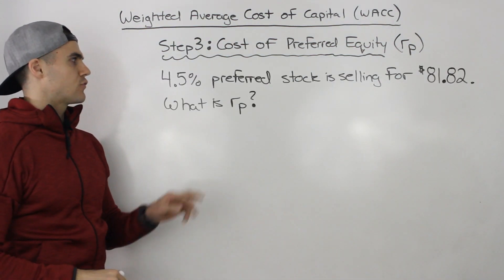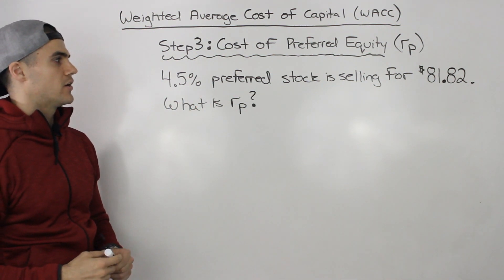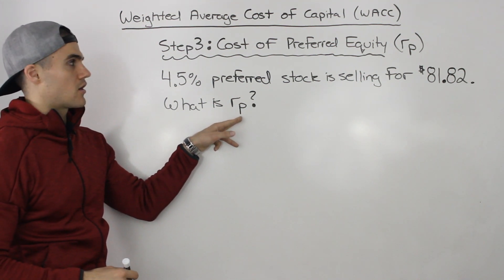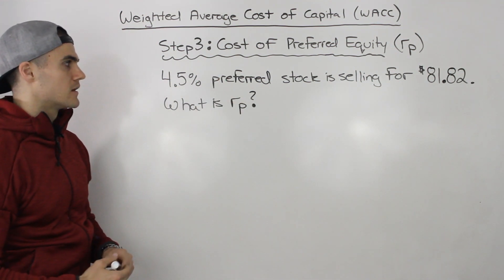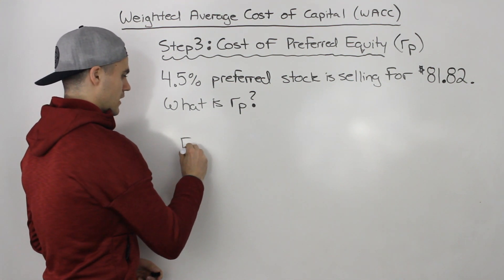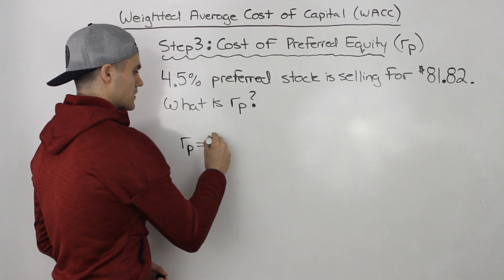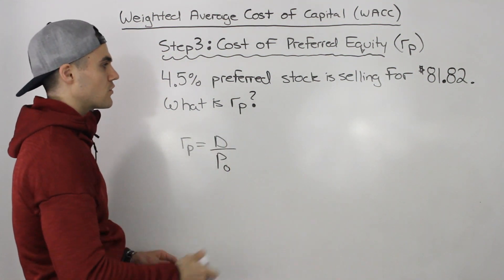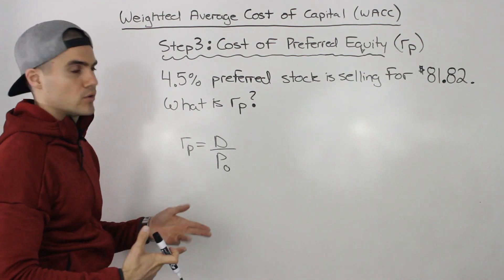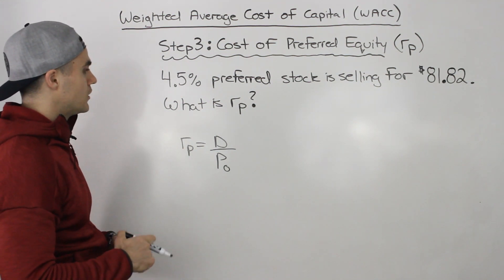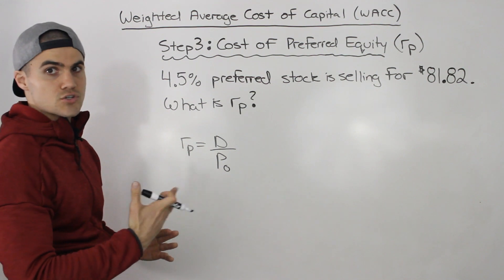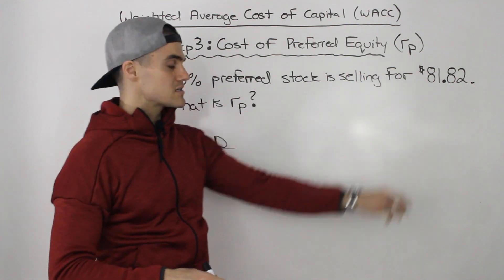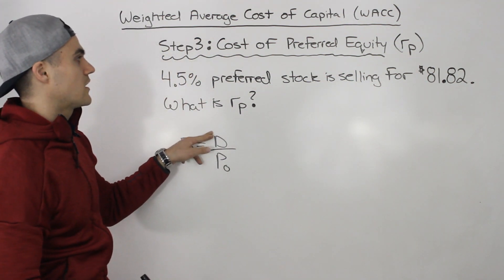So let's say we have a four-and-a-half percent preferred stock selling for $81.82. What is the return on the preferred stock, or the cost of preferred equity? Well, the cost of preferred equity is basically equal to the dividend over the price, since the dividends are constant and paid forever — it's just the present value of a perpetuity. But notice in this question they don't give us the dividend dollar amount straight away; they do give us the price of $81.82.